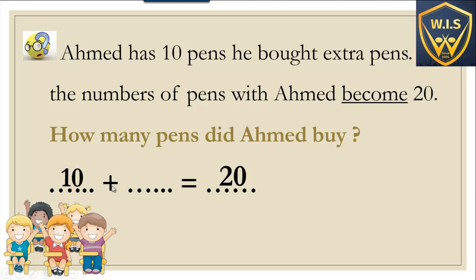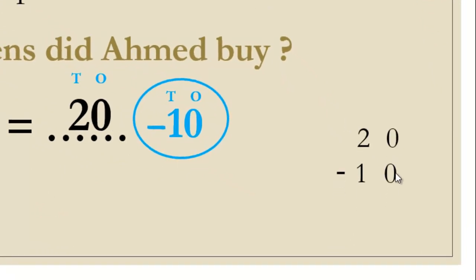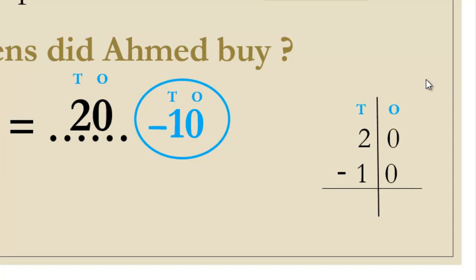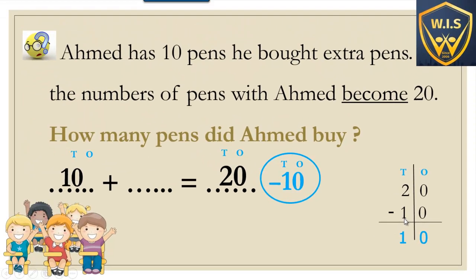It's an addition missing number, so we make a circle on the end and write minus. Minus ten. So let's solve twenty minus ten. It's a two-digit number, so we need a graph: twenty minus ten. Start with ones: zero minus zero equals zero. Tens: two minus one equals one. So the result is ten. Ten plus ten equals twenty.